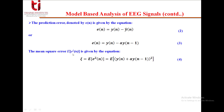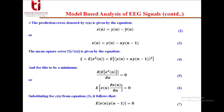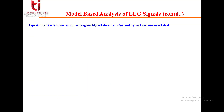Now we have to determine the mean square error, which is given by taking the expectation operator. For this to be minimum with respect to the parameter a, the derivative should be equal to zero. We write equation 6 as the expectation of ∂e(n)/∂a = 0. Substituting e(n) = y(n) - a·y(n-1), we get E[e(n)·y(n-1)] = 0. This equation 7 is known as the orthogonality relation: it says that the error e(n) and y(n-1), the past value, are uncorrelated.